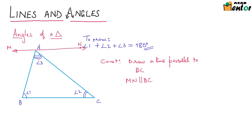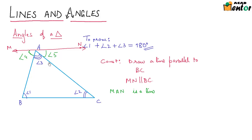Now we see that there are a few more angles formed. There is angle MAB — let me call this angle 4 — and there is another angle, angle NAC — let me call this angle 5. So we have two more angles, angle 4 and angle 5. We know that M, A, N is a line, and since it is a line, the sum of all angles present on it is 180 degrees. That means angle 3 plus angle 4 plus angle 5 is equal to 180 degrees.